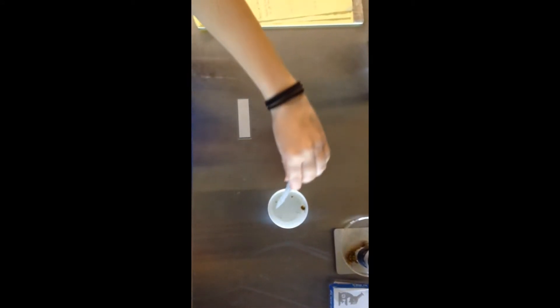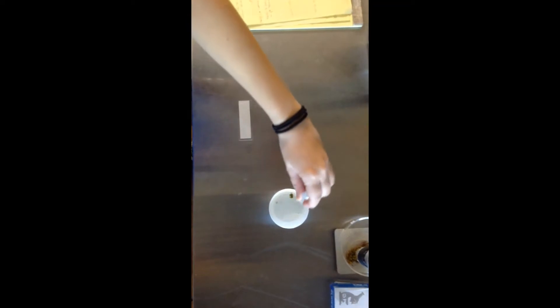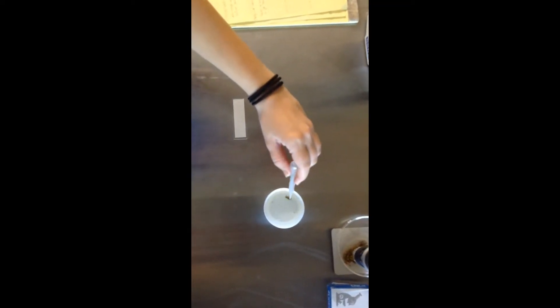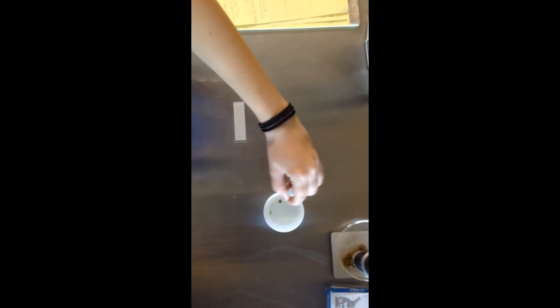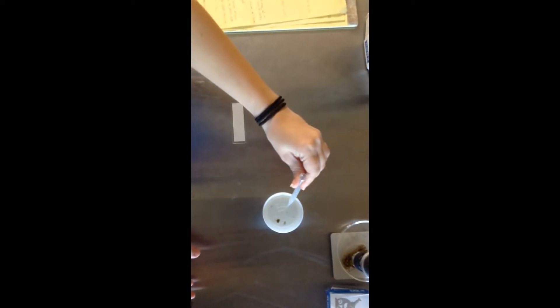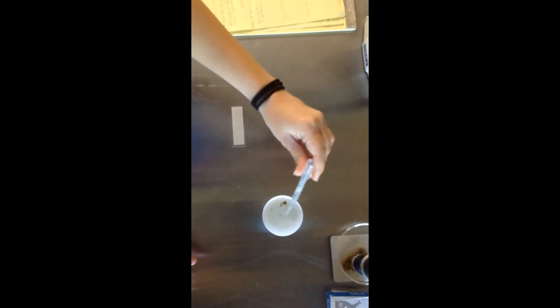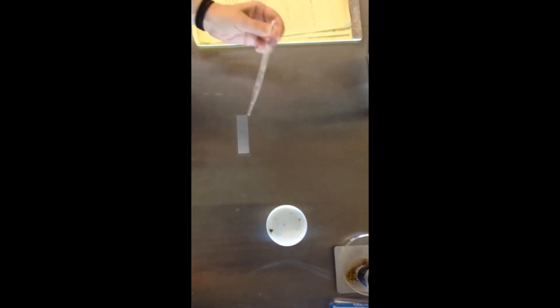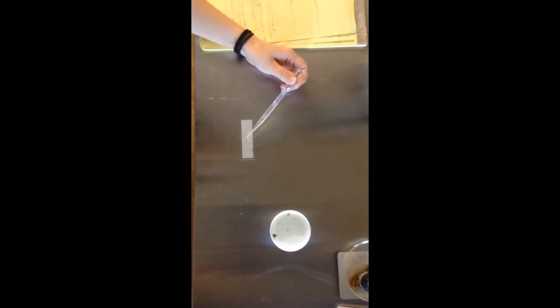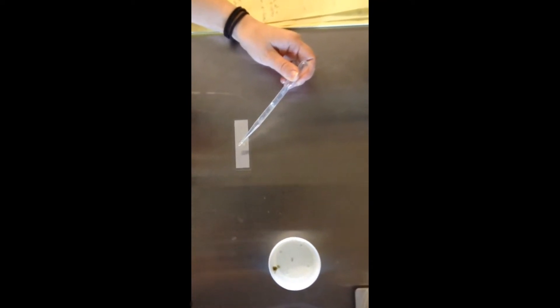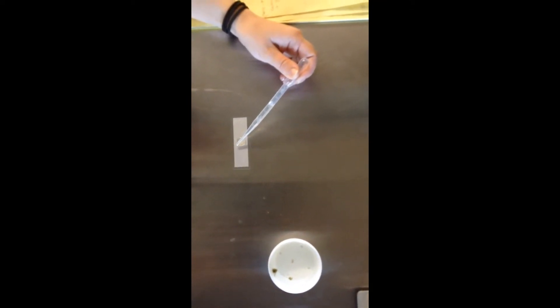Before we set up our slide, the first thing that we're going to want to do is mix around our sample, because all of those living organisms and those things that we are trying to see tend to stick to the sides of the cup. You want to make sure you get a nice even distribution, and then you're going to want to take your dropper, squeeze it, and get a nice amount in there. You don't want to just pour it all on there, you only need about three drops right in the center where that magnification is. One, two, three.